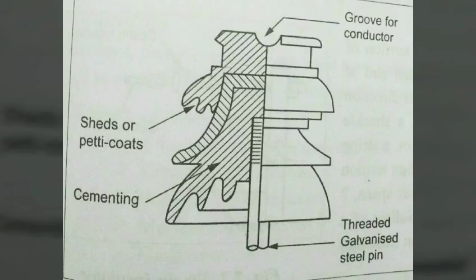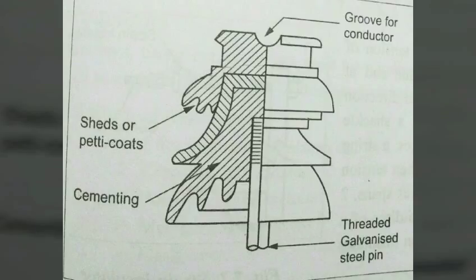Properties of a good insulator: It should be mechanically strong to bear the conductor load. Leakage current through the insulator should be minimum, so it must have very high insulation resistance. It should have high dielectric strength or high relative permittivity.